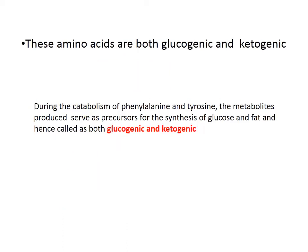These amino acids — phenylalanine and tyrosine — are both glucogenic and ketogenic. During catabolism of phenylalanine, the metabolites produced serve as precursors for the synthesis of glucose, making it glucogenic, and also for the synthesis of fats, making it ketogenic.